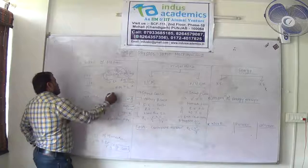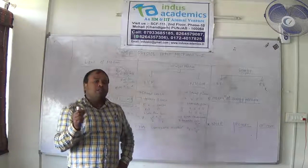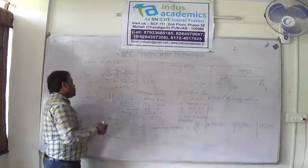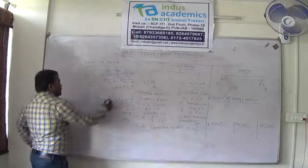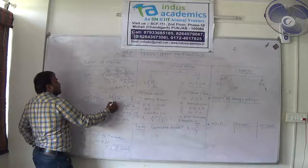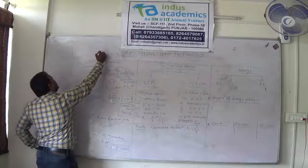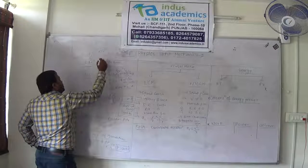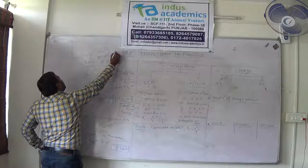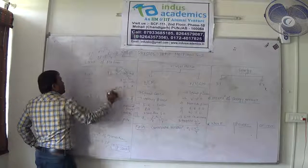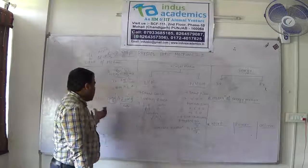Coming to the second law. The statement says that the net external force acting on a body is equal to the rate of change in momentum — that is delta P by T, change in momentum by time. Momentum is mass into velocity, so change in momentum is mass times (final velocity minus initial velocity) divided by time. This gives us F = ma, which is actually the inference of Newton's second law.